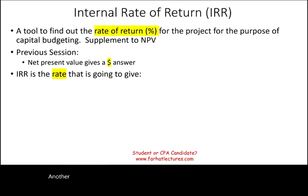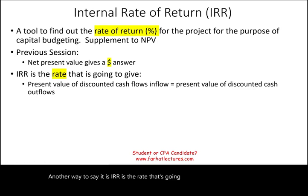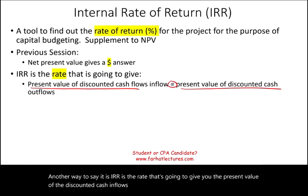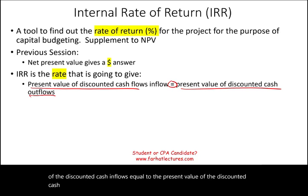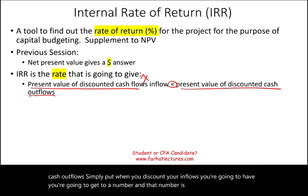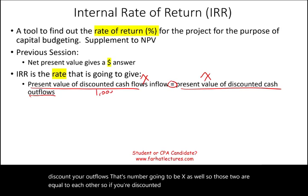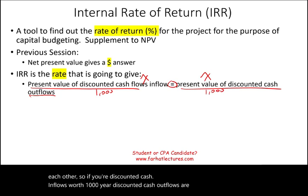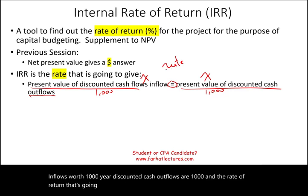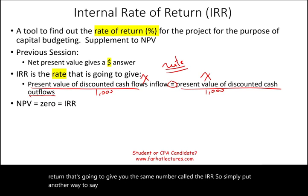Another way to say it is: IRR is the rate that's going to give you the present value of the discounted cash inflows equal to the present value of the discounted cash outflows. When you discount your inflows, you're going to get to a number X, and when you discount your outflows, that number is going to be X as well. So those two are equal to each other. If your discounted cash inflows were $1,000, your discounted cash outflows are $1,000. The rate of return that gives you this same number is called the IRR. Another way to say it: in IRR, the net present value is zero.